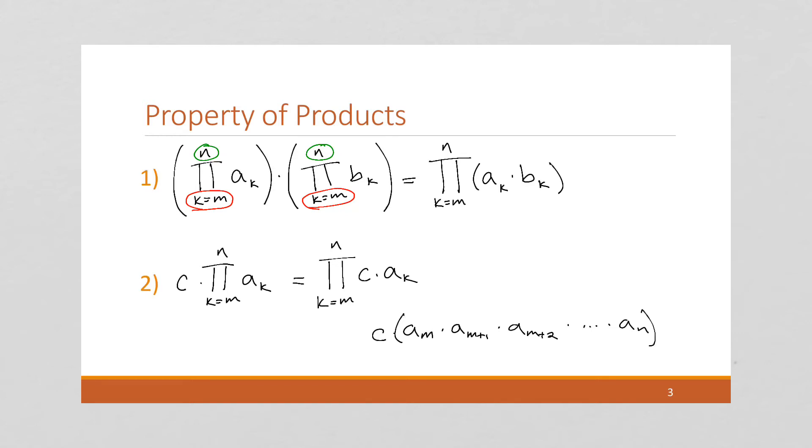No. In this case, whether or not I have these parentheses, if everything inside is multiplied, then there's still only one c. This is not the same as c times a of m times c times a of m plus 1 and so on. That doesn't work.